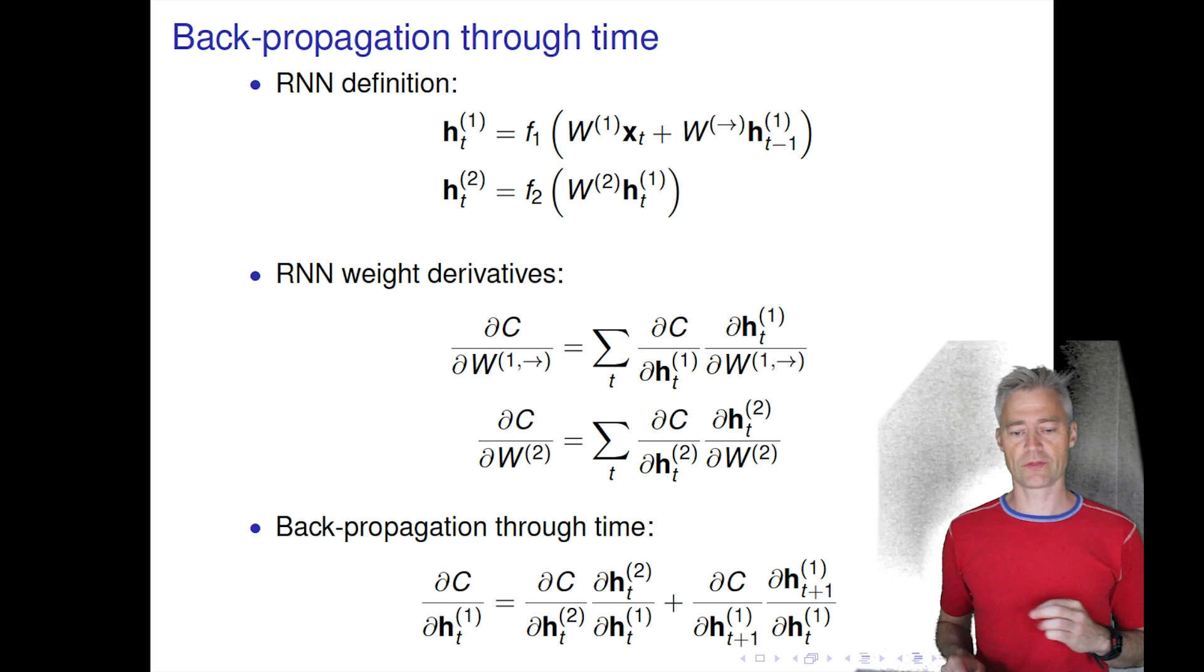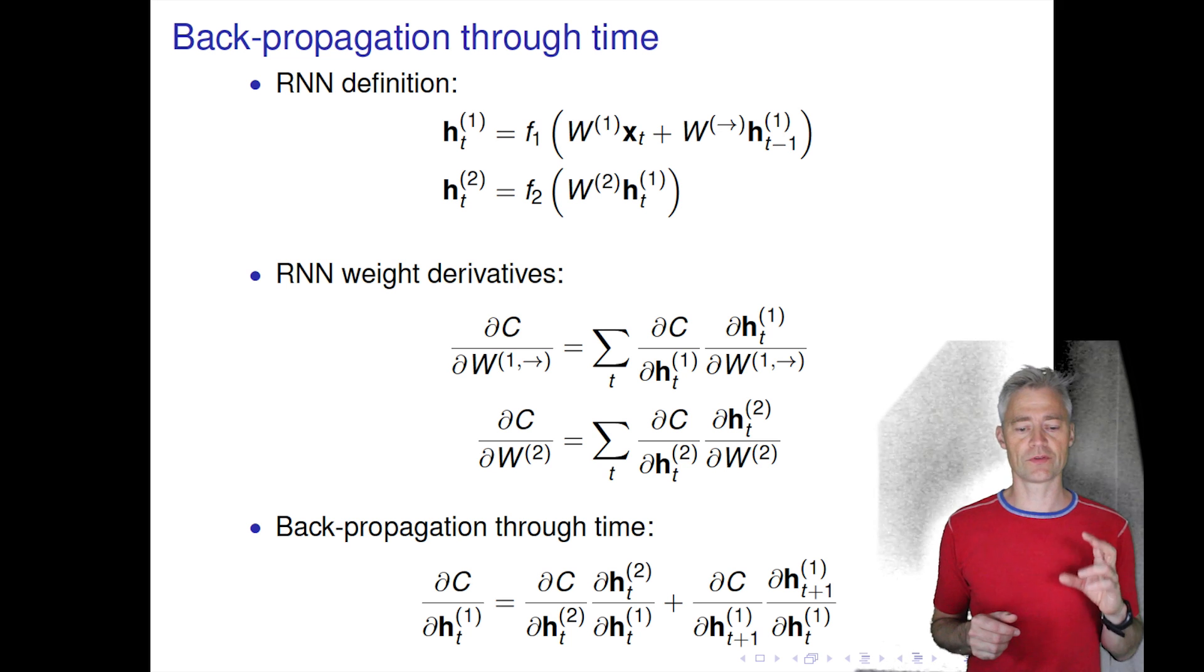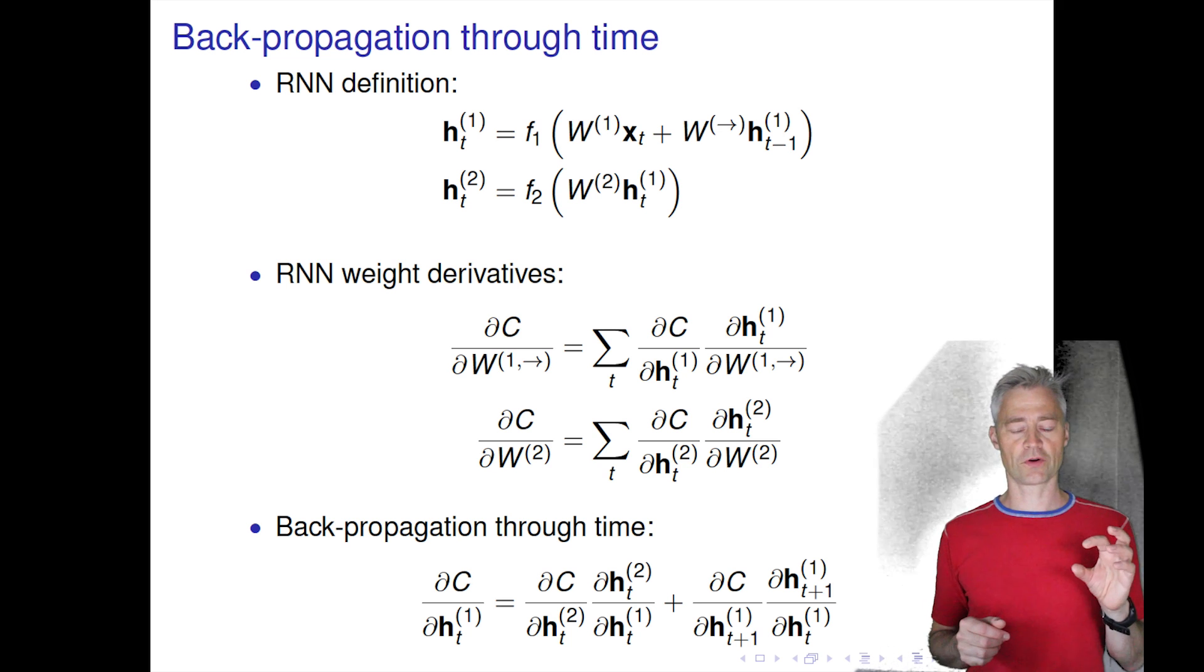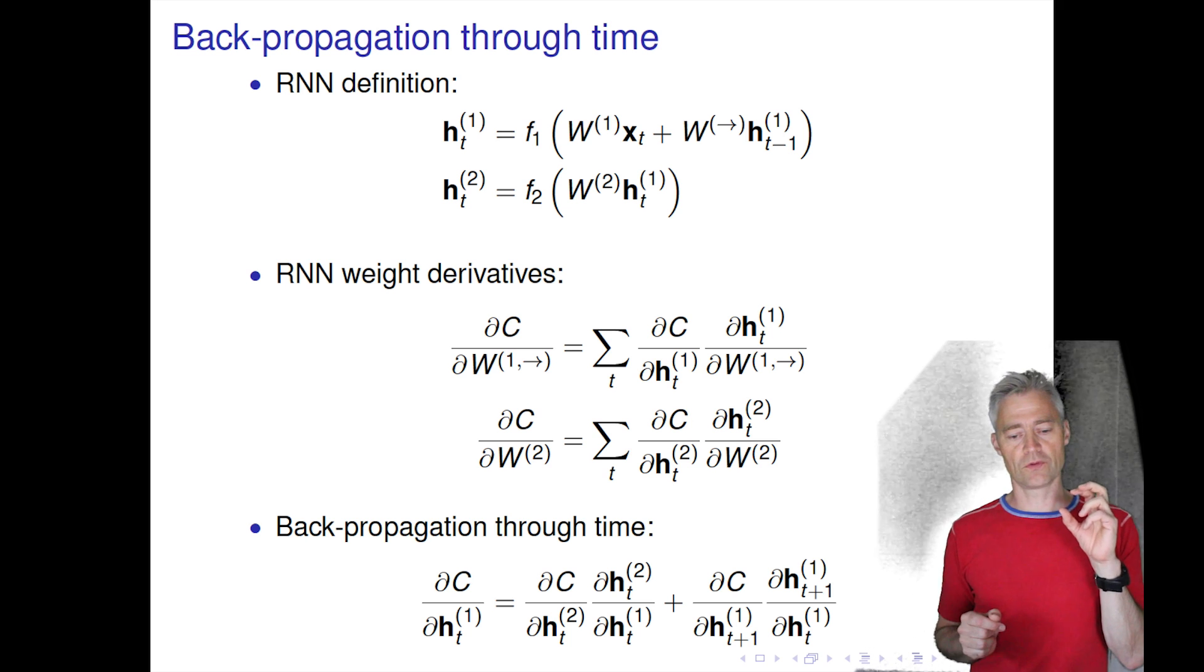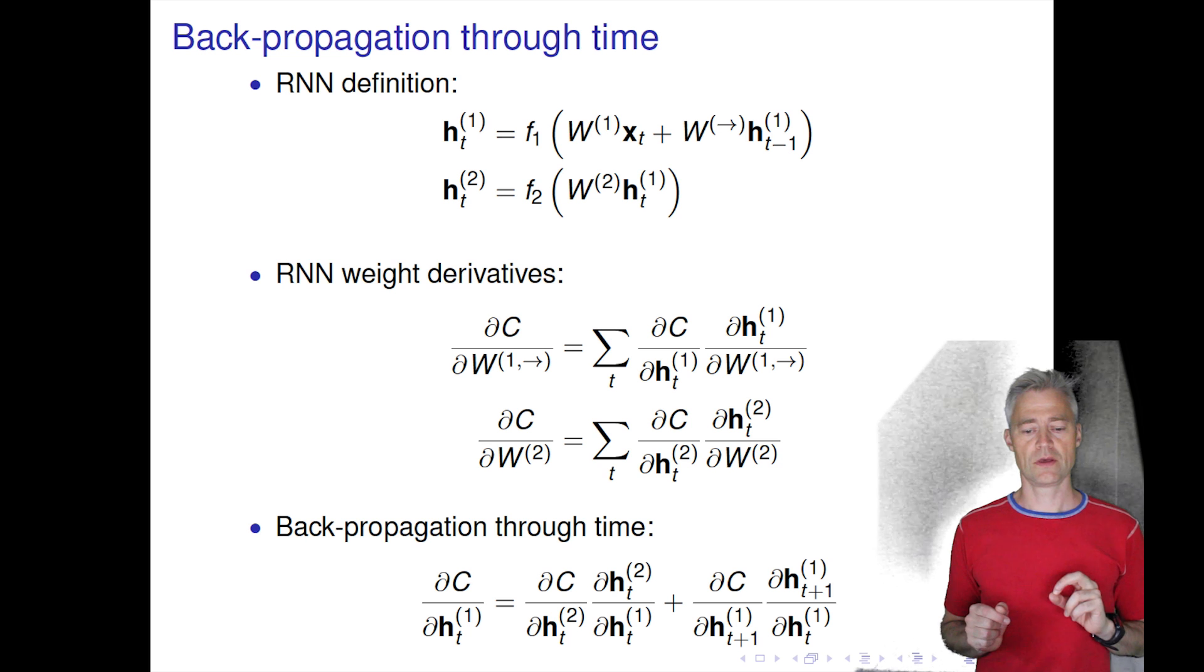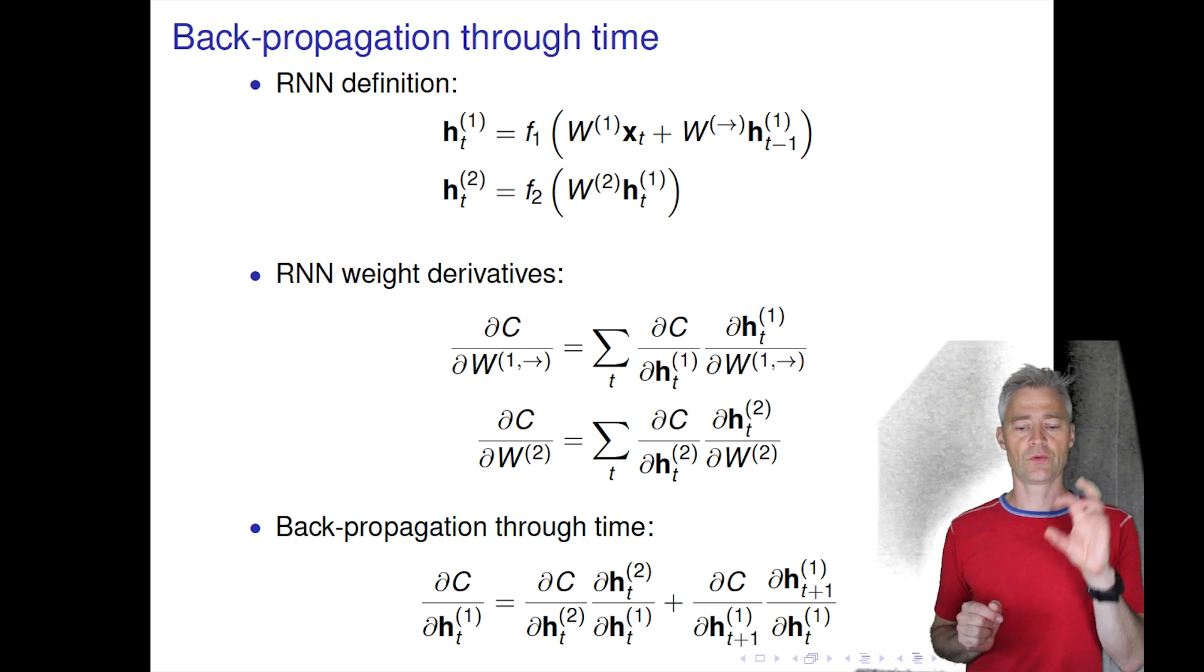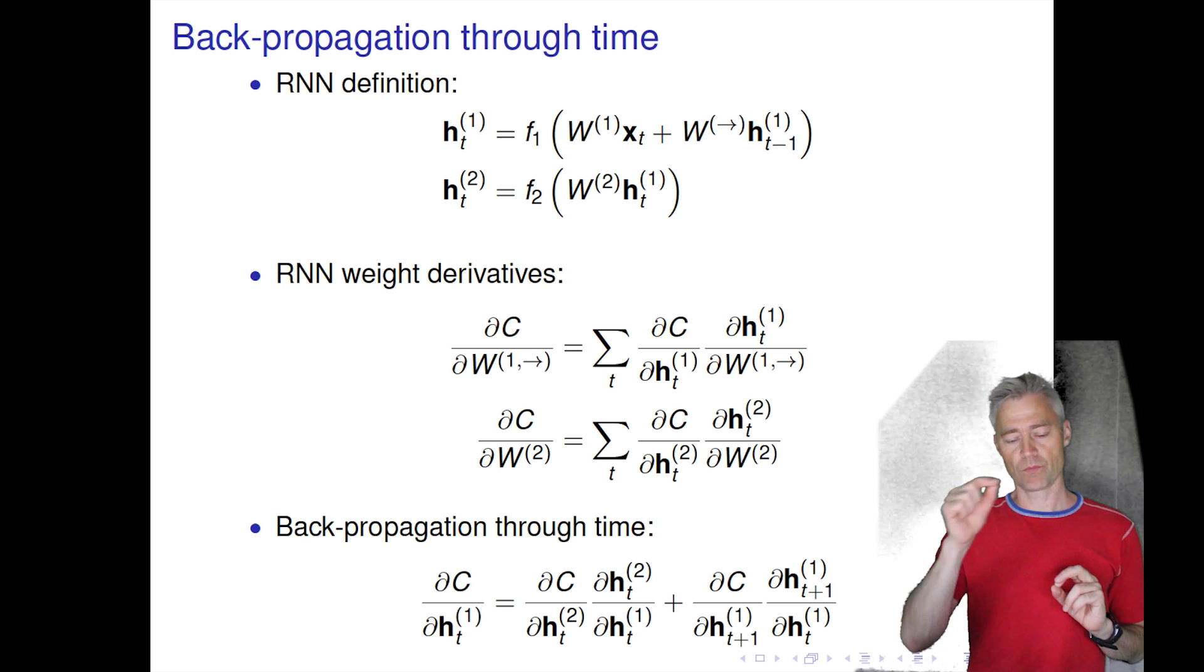But now comes the complicated thing, because we need to take the derivatives of the cost function with respect to the activations. The first term I've written here is the usual chain rule term.